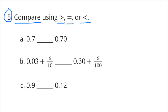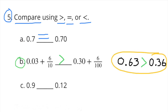Number 5: compare using greater than, equal to, or less than symbols. A: 7 tenths is equal to 70 hundredths. B: 3 hundredths plus 6 tenths is greater than 30 hundredths plus 6 hundredths. C: 9 tenths is greater than 12 hundredths.